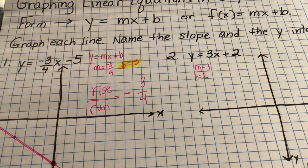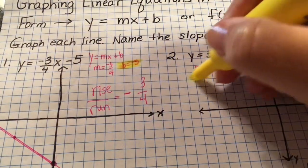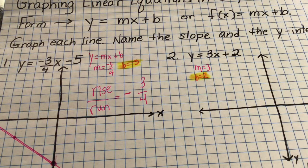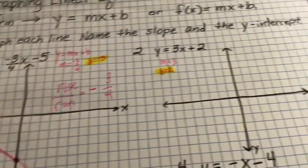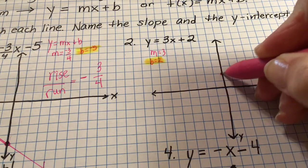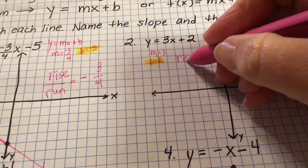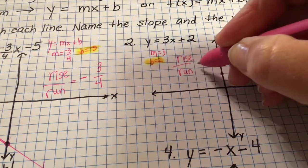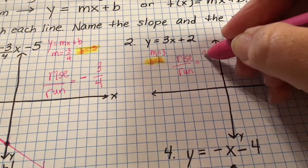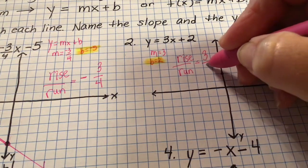Remember, go to your y-intercept first. My y-intercept is two, so I'm going to start at positive two on the y-axis — one, two. From there, I'm going to apply a slope of three. Slope is rise over run. Since I only have three, I turn it into a fraction: three over one.